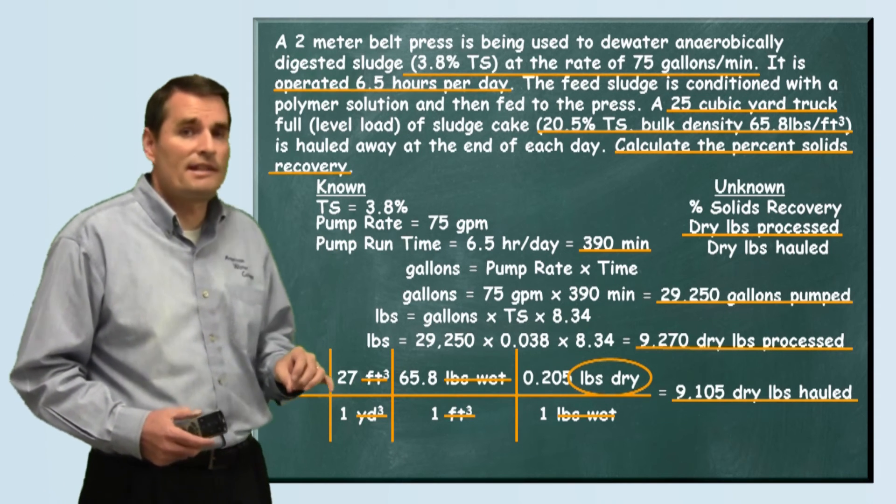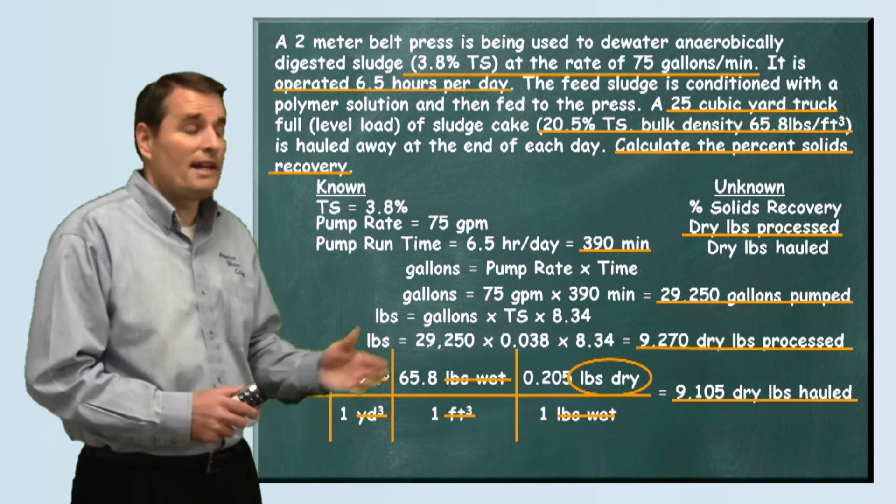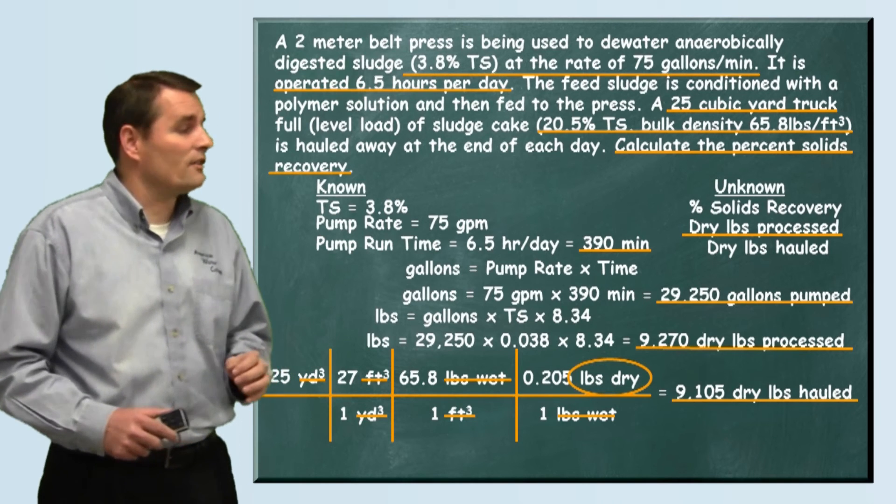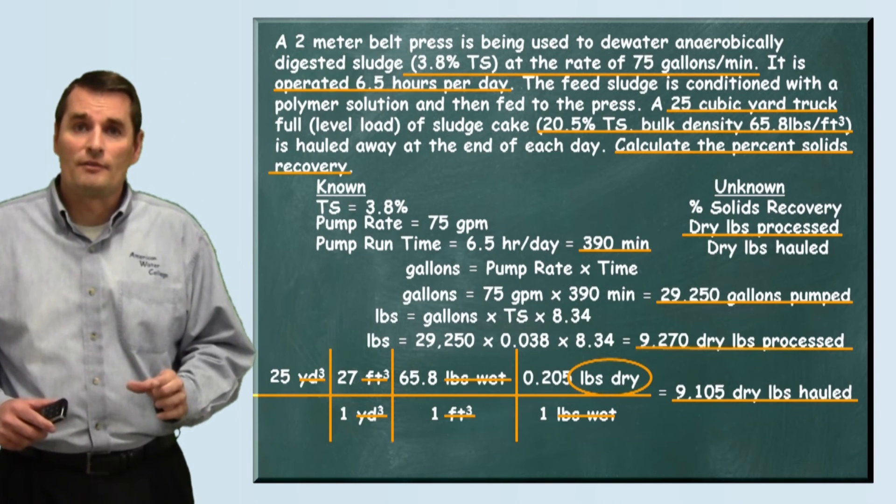Now our units have all canceled out and we're ready to do the math here. When we do that we see that we're hauling away at the end of this day 9,105 dry pounds of sludge.